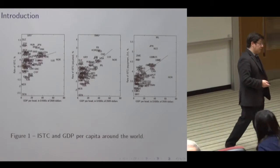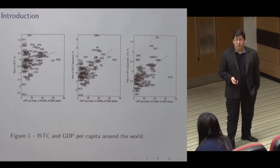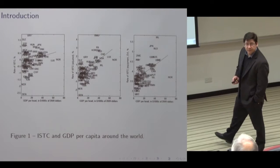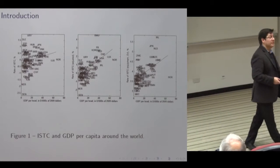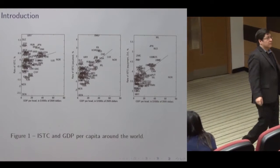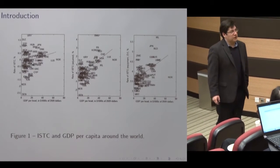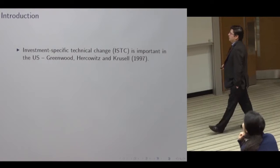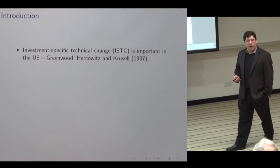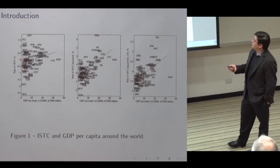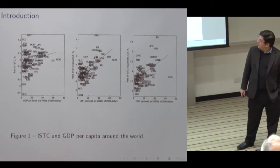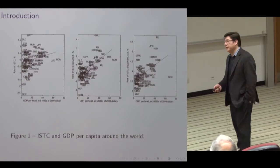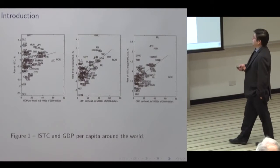Most of these data are going to be for the post-war periods, like 1950 or so, up to 2011. That graph is really just motivating. It's not telling us how important those things are — this correlation could be there with ISTC being extremely important everywhere or not important anywhere. So this graph doesn't tell us anything in itself, but it is a motivating factor.